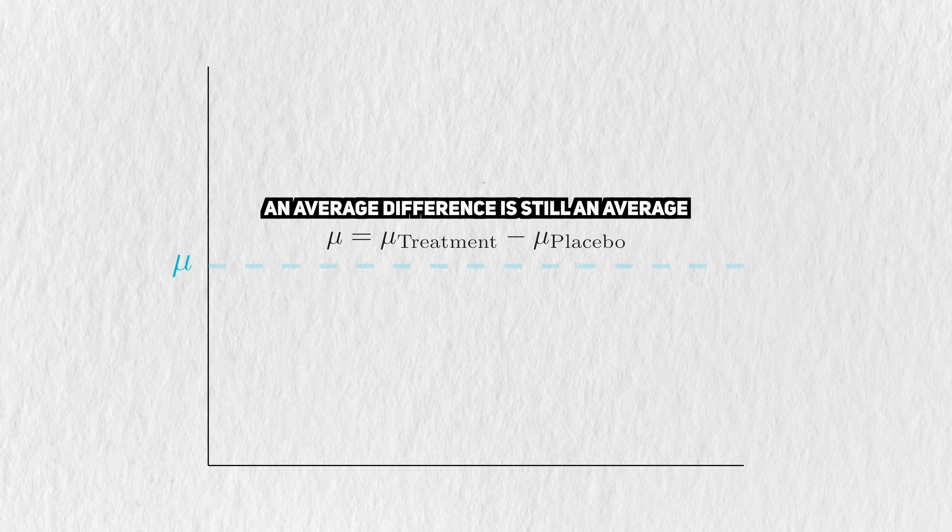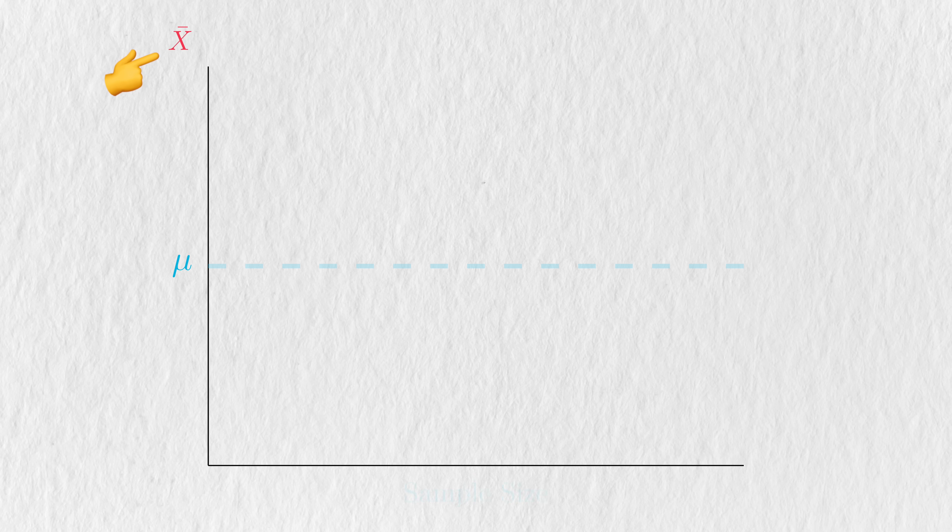This symbol mu represents a true but unknown average that we want to learn more about. A common example is the average difference in means between the treatment and the placebo group in a randomized controlled trial, also known as the treatment effect. We can make a guess from mu based on the data. That's what this value, x bar, is supposed to represent.